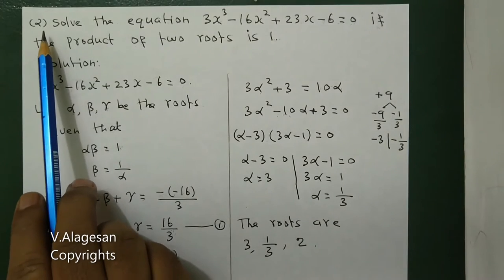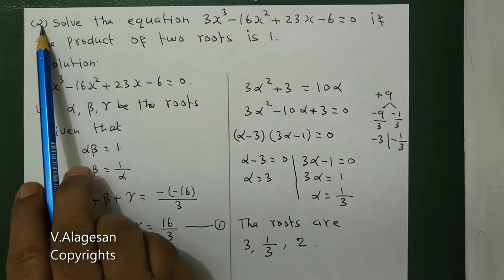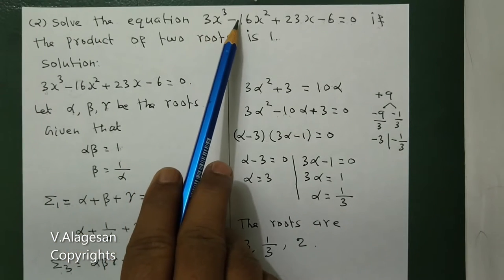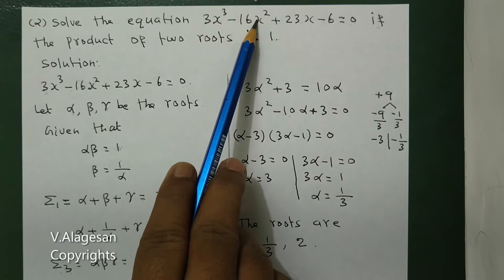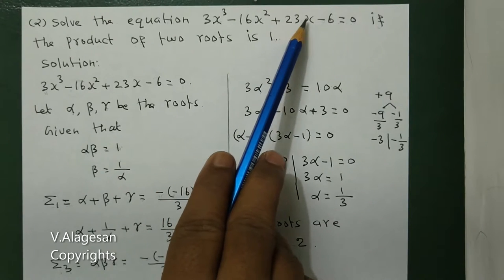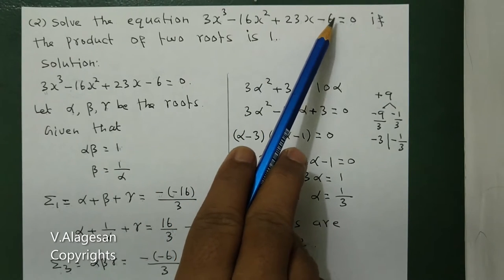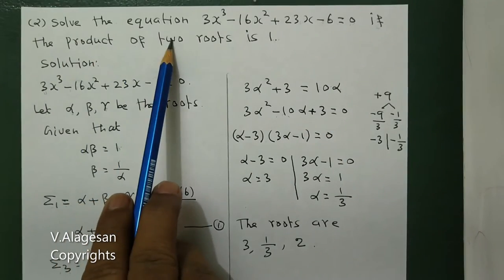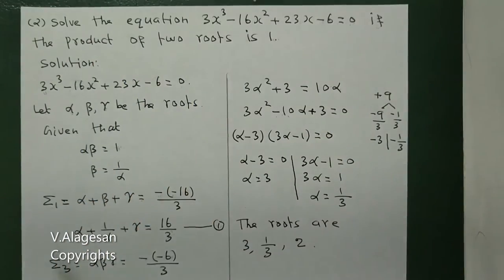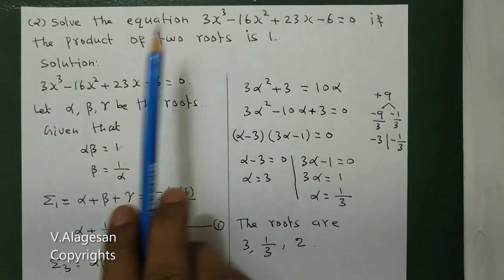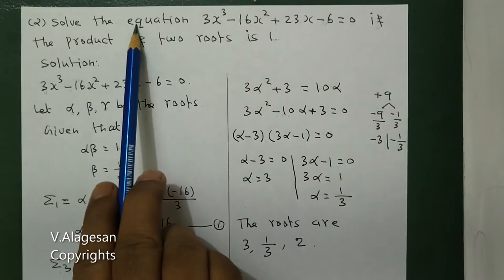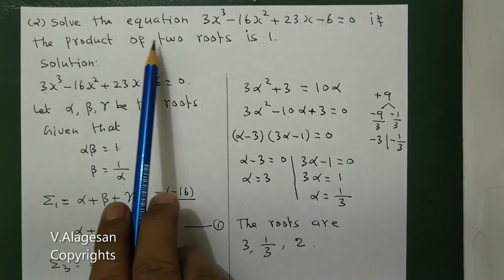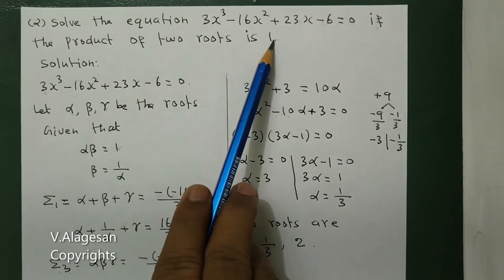Hi students, see question number 2. Solve the equation 3x cubed minus 16x squared plus 23x minus 6 equal to 0, if the product of 2 roots is 1. This is a cubic equation. The additional information given is that the product of 2 roots is 1.